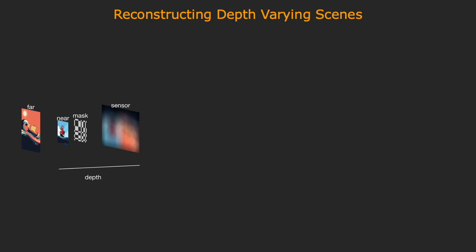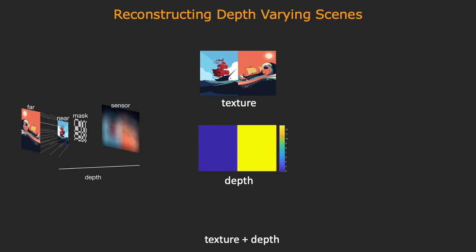There are two broad approaches for reconstructing depth-varying scenes. The first one models the scene with a texture map and a depth map. The number of unknowns is approximately twice that of measurements, but it is a highly nonlinear inverse problem.